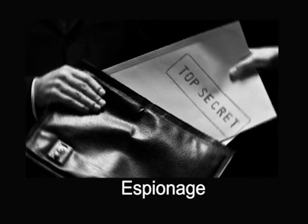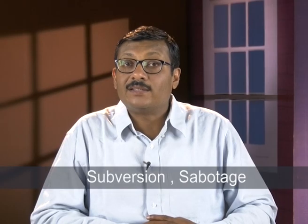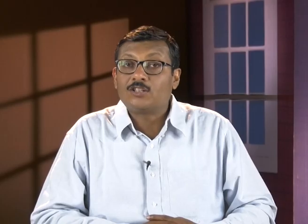What are the objectives of RAW? The main objective of any intelligence agency is to collect intelligence and information. The prime objective of RAW is also to collect intelligence — not the brain, but intelligence meaning what other countries are planning or thinking about India. It collects information via espionage, psychological warfare, subversion, sabotage, and assassination. It also maintains collaboration with other countries and their intelligence agencies.